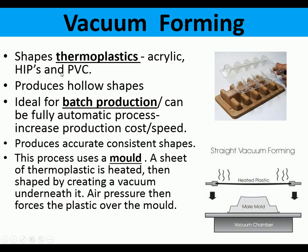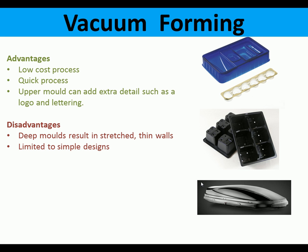Vacuum forming is a process which shapes thermoplastics — usually acrylic, HIPS, and PVC — producing hollow shapes. It can be a mass production or batch production process, and is also used in school. It creates accurate, consistent shapes using a mold and a heated sheet of plastic. Advantages include low cost and speed, and an upper mold can add extra details such as logos and lettering. Disadvantages are that deep molds can result in stretched thin walls, and it is limited to simple designs with a single wall thickness.